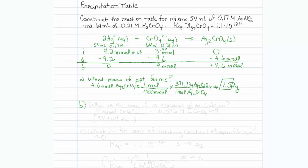The next question says, what is the concentration of excess reactant at equilibrium? Well, please note that I have 9 millimoles right here of my material, and that would be my chromate, and it is in 54 plus 64 milliliters, so 9 divided by 54 plus 64 should give me 0.076 molar, and that is my concentration of chromate.